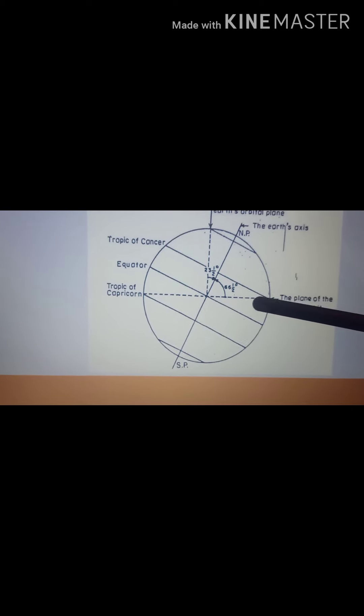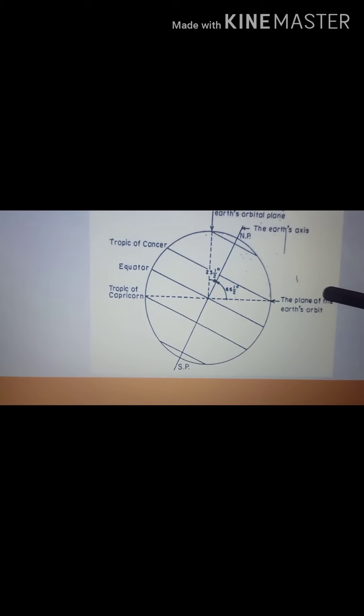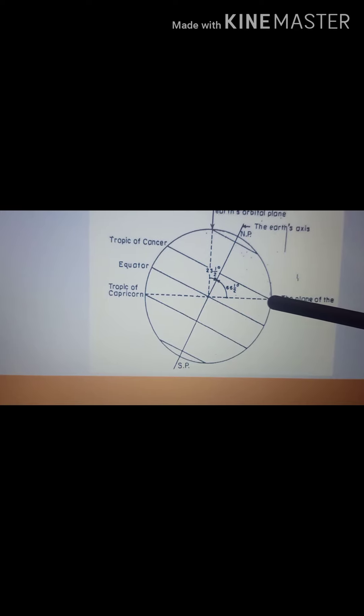And the orbital plane is, you know what is orbit? Orbit is the path on which the earth is believed to be revolving around the sun. With the plane of the earth's orbit the axis makes an angle of 66.5 degree.